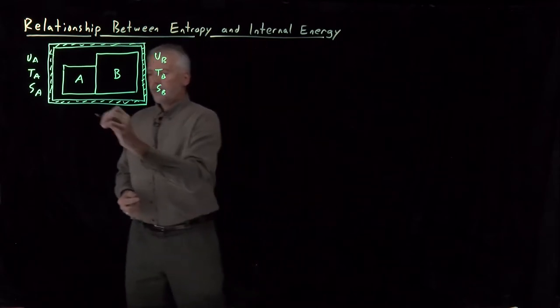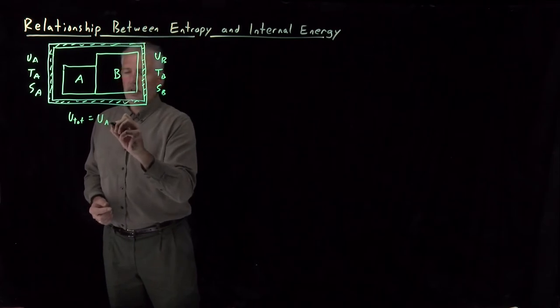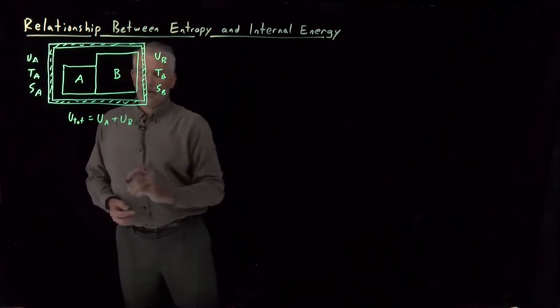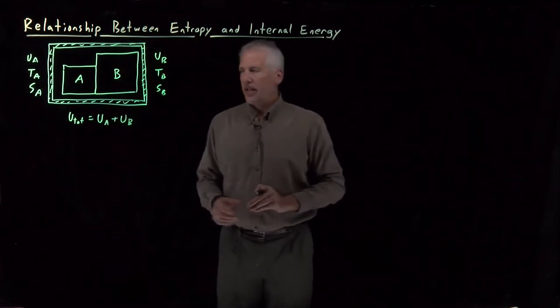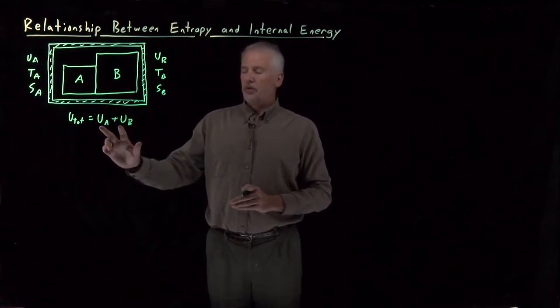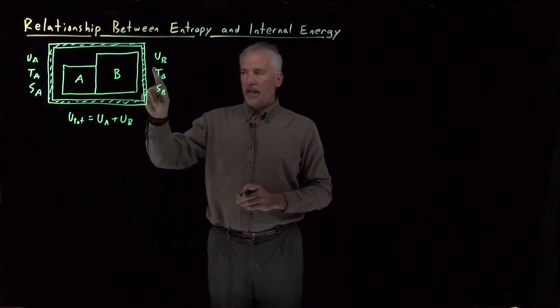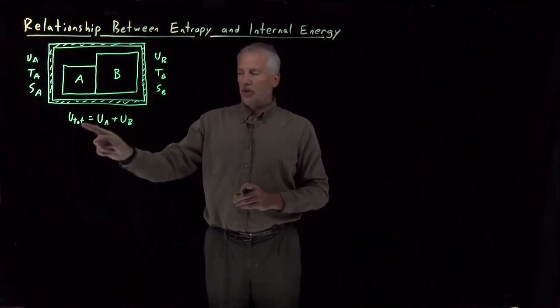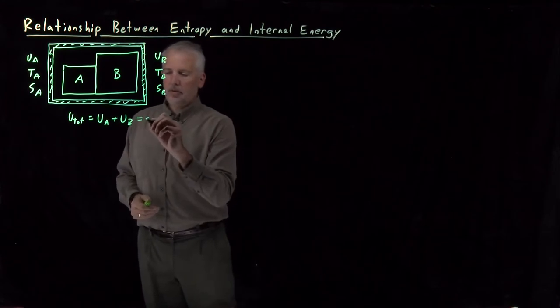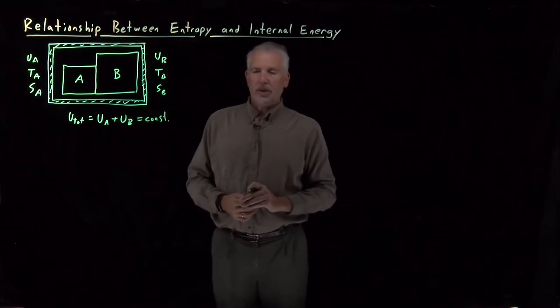So the purpose of thermally insulating the material is to guarantee that the energy of the two systems is constrained or constant. So when energy flows from one to the other, the energy of A can change, the energy of B can change, but the total energy of the two systems combined is not going to change. Energy has to be conserved.